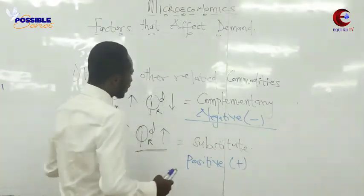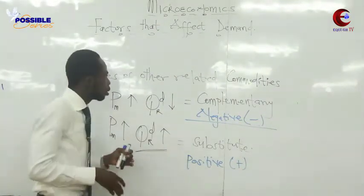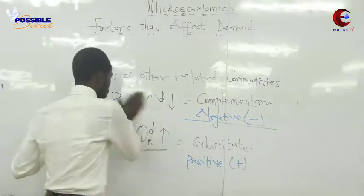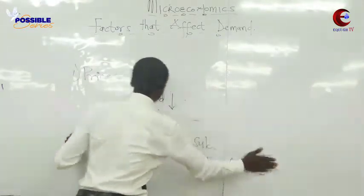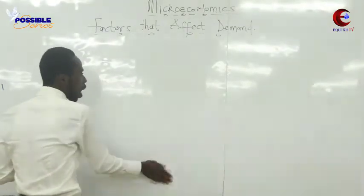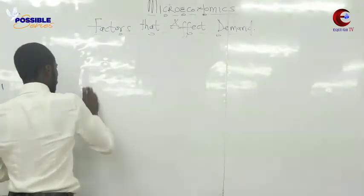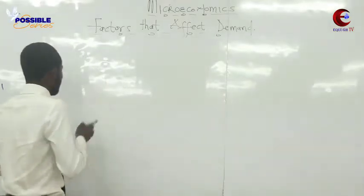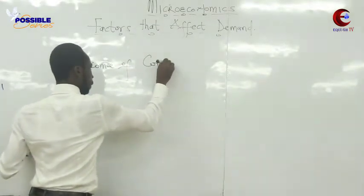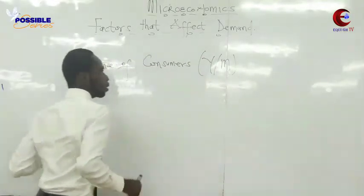Your definition must include both cases — complementary goods and substitutes. That is one of the factors: price of other related commodities. Now the next factor is income of consumers. I am explaining only these two because they are the most technical aspects.